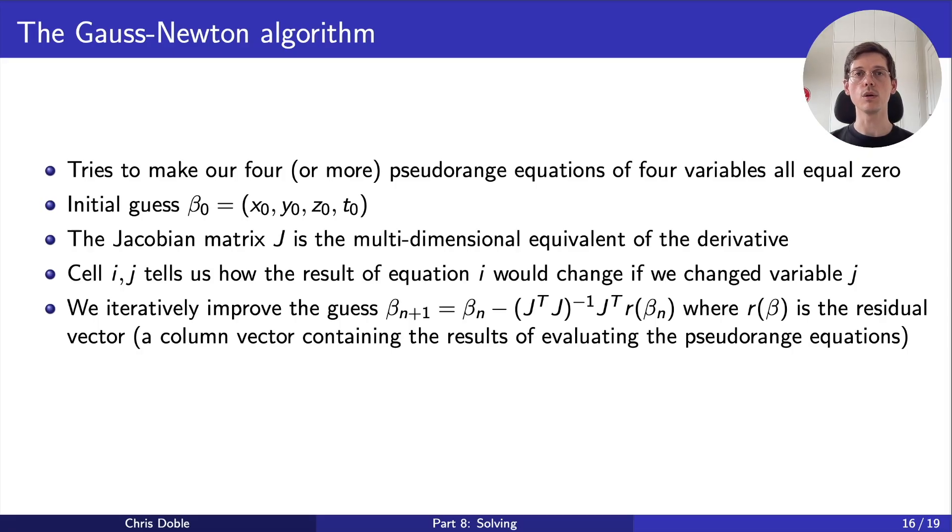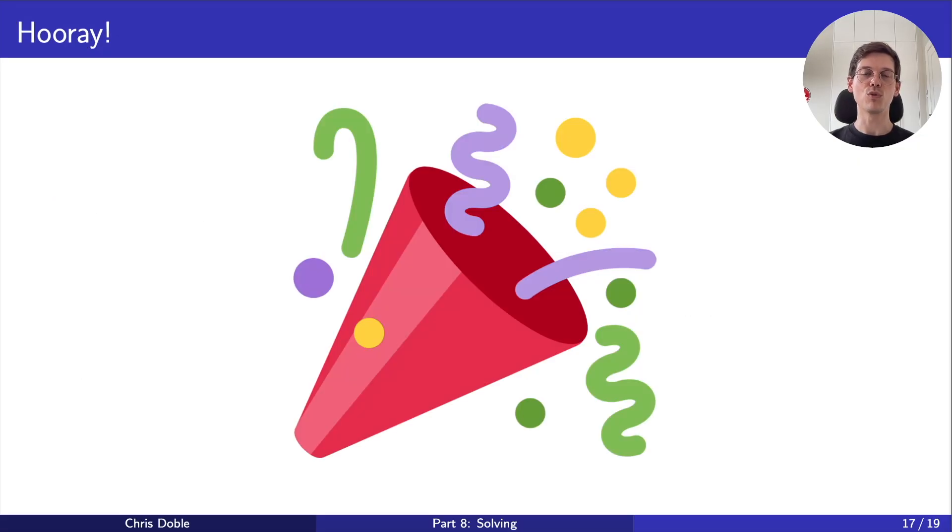We have one last thing to do, which is to convert our final guess from ECEF coordinates to geodetic coordinates, so they're expressed as latitude, longitude, and height. We can do this with a technique called Bowring's method. And with that, we've done it. We've gone from raw GPS signals to an estimate of our location.